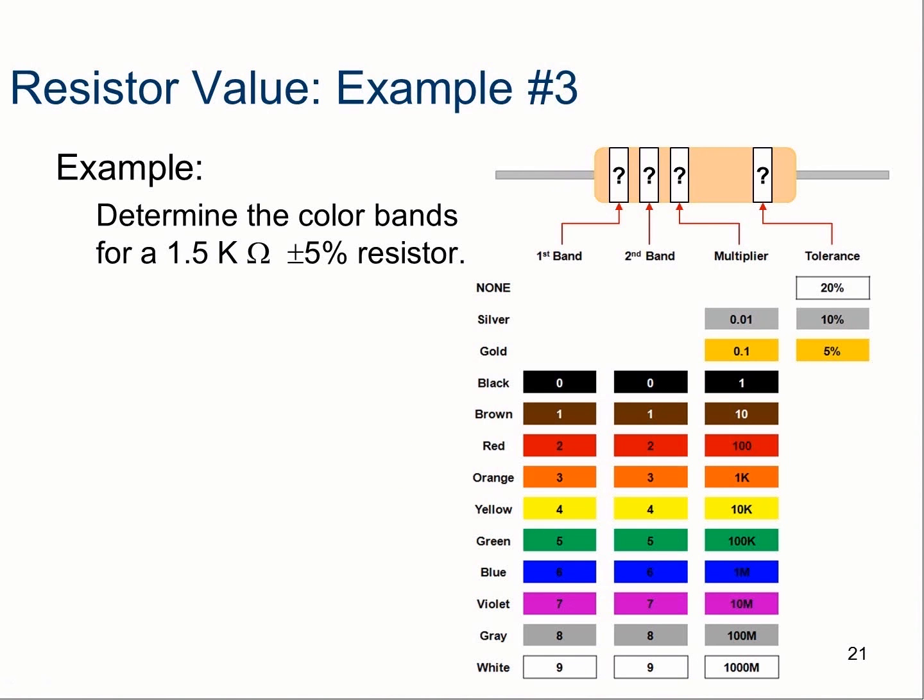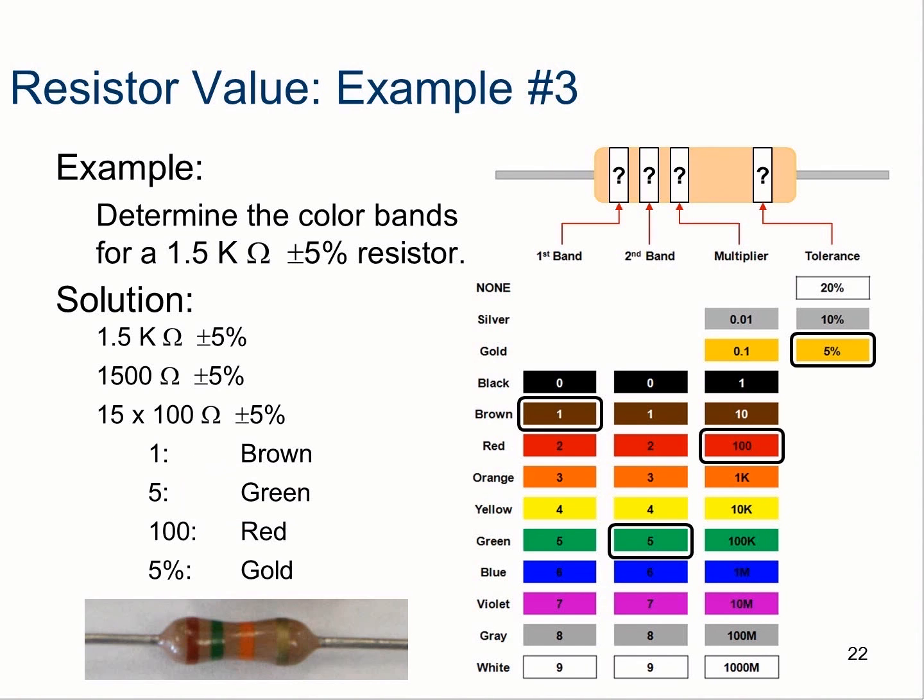Here's another example. This resistor needs to be 1.5 kilo ohms. So, if it needs to be 1.5 kilo ohms, what color pattern would you find on that resistor? Pause the video, and try to figure it out. Well, if you decided that you should have a brown, a green, and a red with a gold tolerance, very good. You did an excellent job. That would be 1.5 kilo ohms.